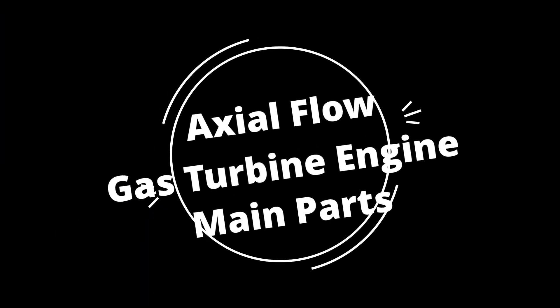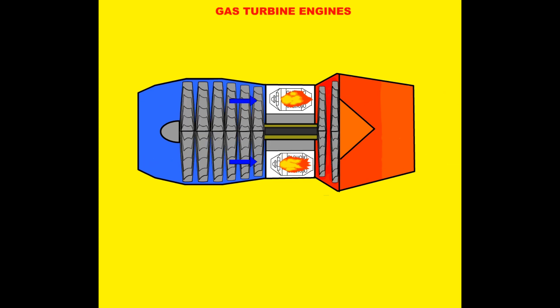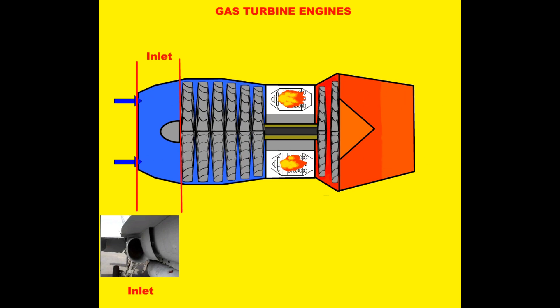Now, let's try to understand the axial flow gas turbine engine in its simplest form. Axial flow gas turbine engines basically consist of five main parts. These are: air intake that allows atmospheric air to be taken into the engine.